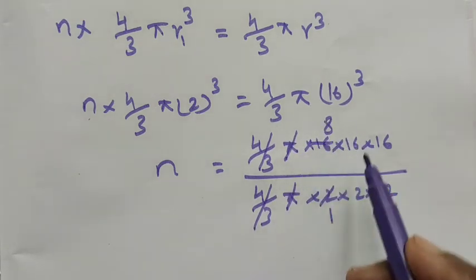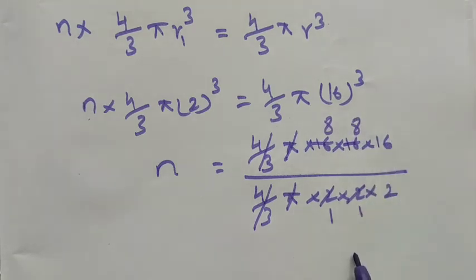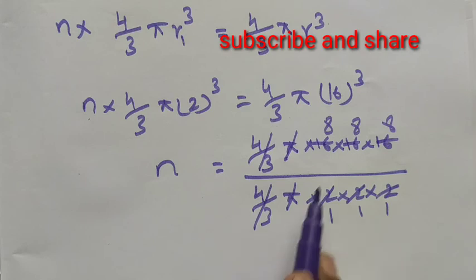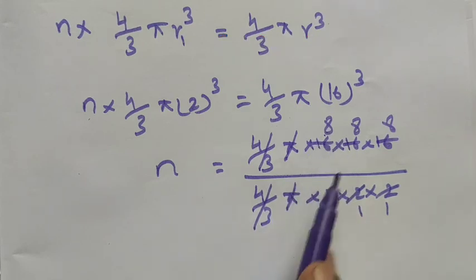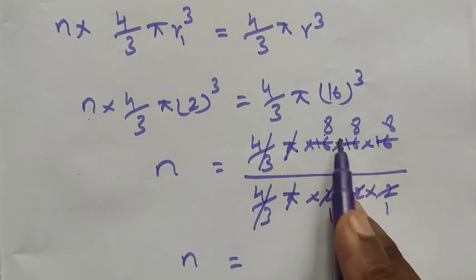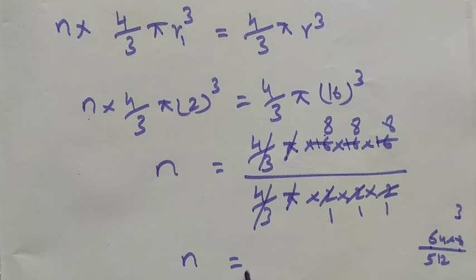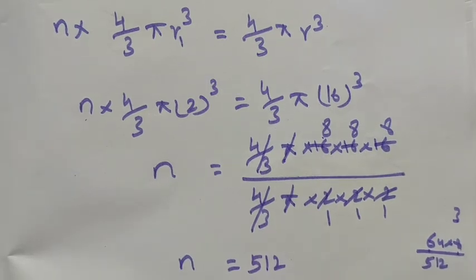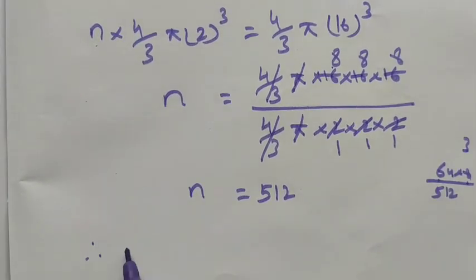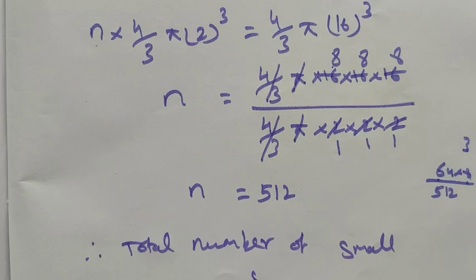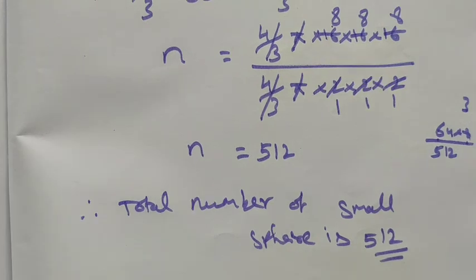Simplifying: 16 cubed divided by 2 cubed equals 512. Therefore n is equal to 512. The number of small spheres obtained is 512. Thank you, students.